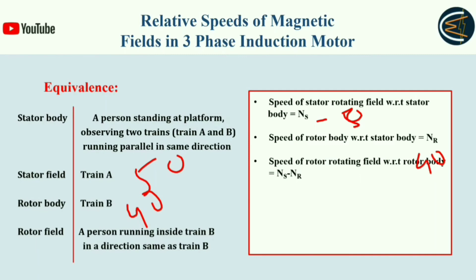In the analogy, the rotor field is your friend. Just as the rotor field speed depends on the relative speed between the stator field and the rotor body, your friend runs at the relative speed between the two trains in order to experience it. You can now relate these two things.